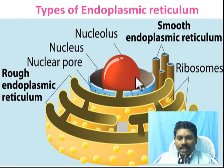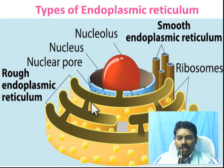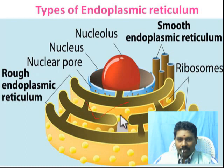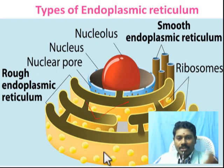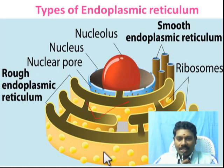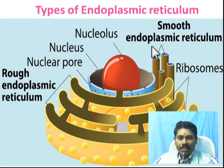Here you can see the nucleus and around the nucleus you can visualize the nuclear membrane. Immediately adjacent to the nuclear membrane you can see the endoplasmic reticulum — this yellow colored one. There are two types: one is rough and one is smooth. Ribosomes are present in the rough type. If it does not have any ribosomes then it will be smooth.